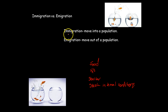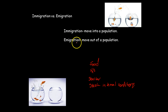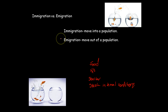If an organism is moving into a population, we refer to it as immigration. If it's moving out of the population, we call it emigration. The two terms sound very similar to one another but are contrasting — one's leaving and one's entering.